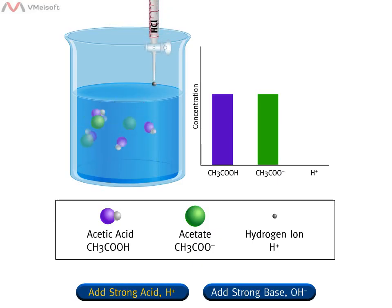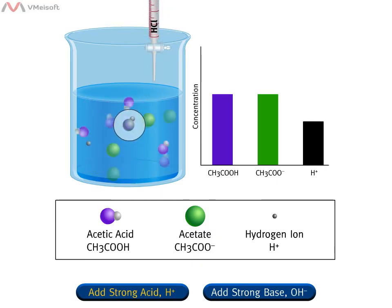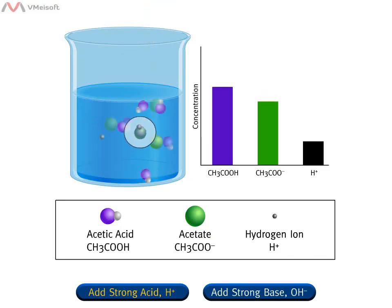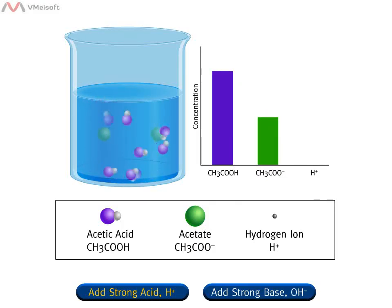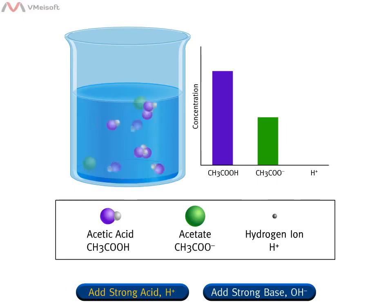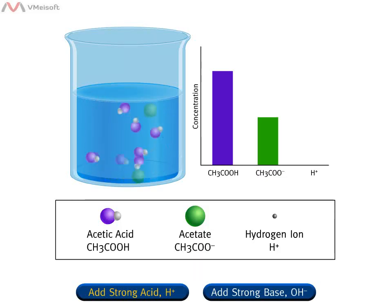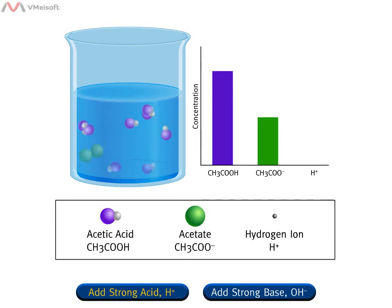Only hydrogen ions, H+, from the hydrochloric acid are shown entering the solution. Chloride is not shown because it is a spectator ion — it does not participate in the reaction. The strong acid, H+, reacts with the base component of the buffer, acetate (CH3COO-), producing the acid component of the buffer, acetic acid (CH3COOH). The buffer has resisted a change in pH by removing strong acid, H+, from the solution.